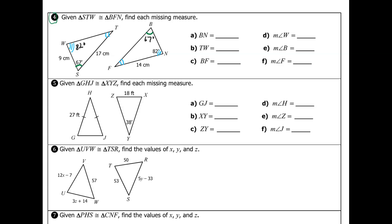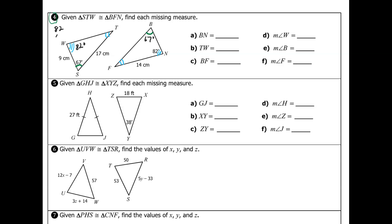Now I can find the third angle, angle T, which is congruent to angle F. Since the three angles in a triangle add up to 180, I'll take the first triangle: 82 plus 67 equals 149, and 180 minus 149 equals 31. So angle T and angle F are both 31 degrees.